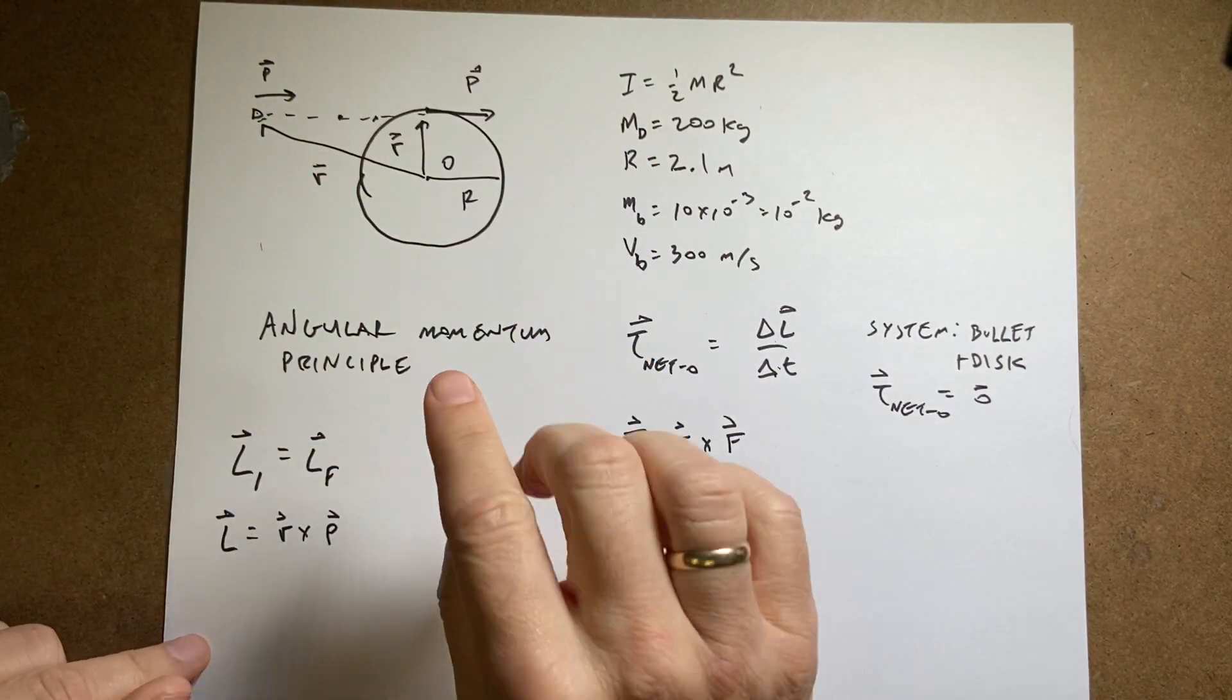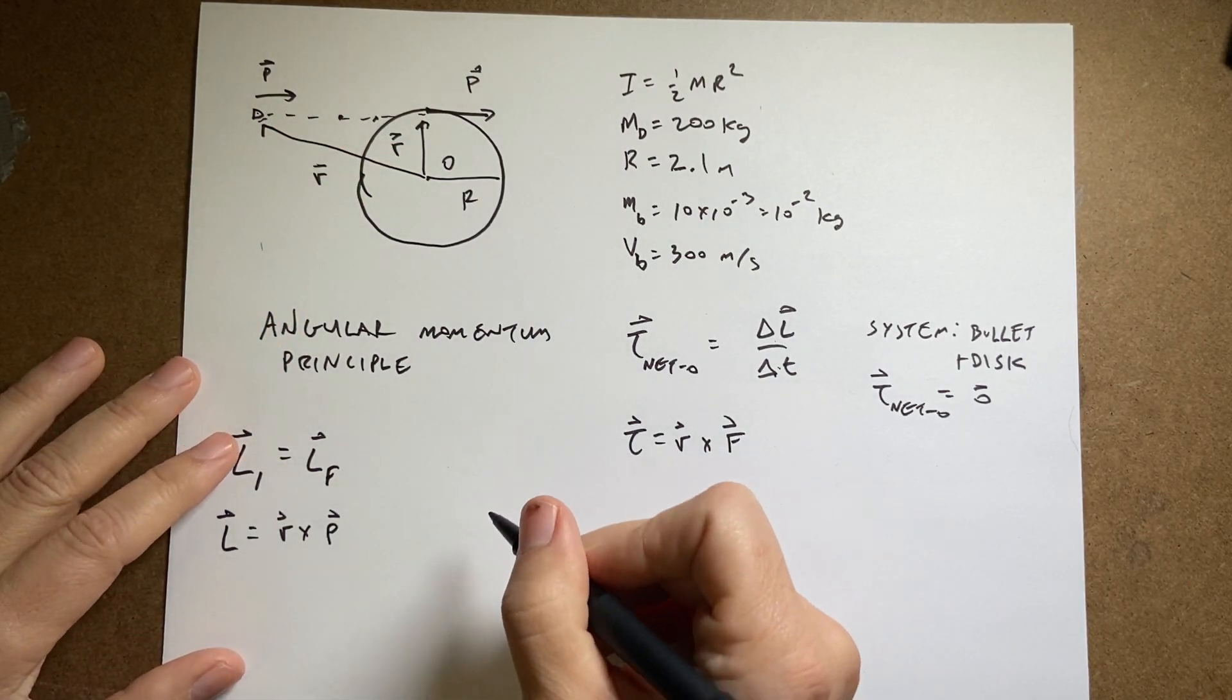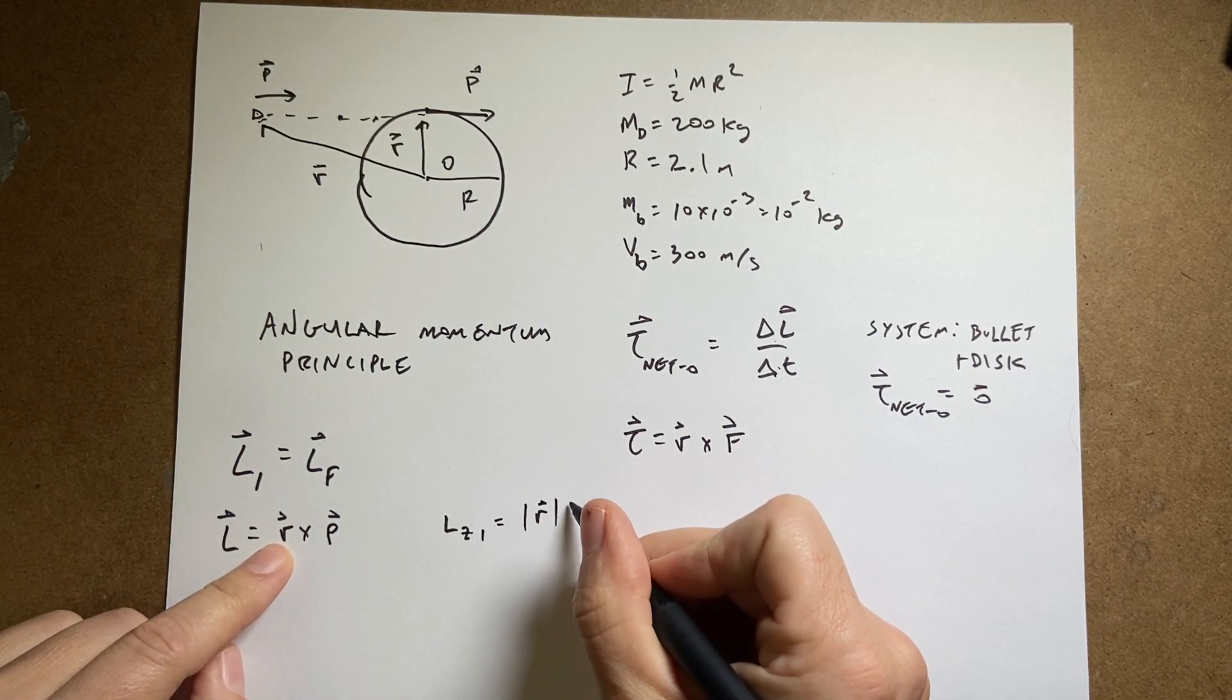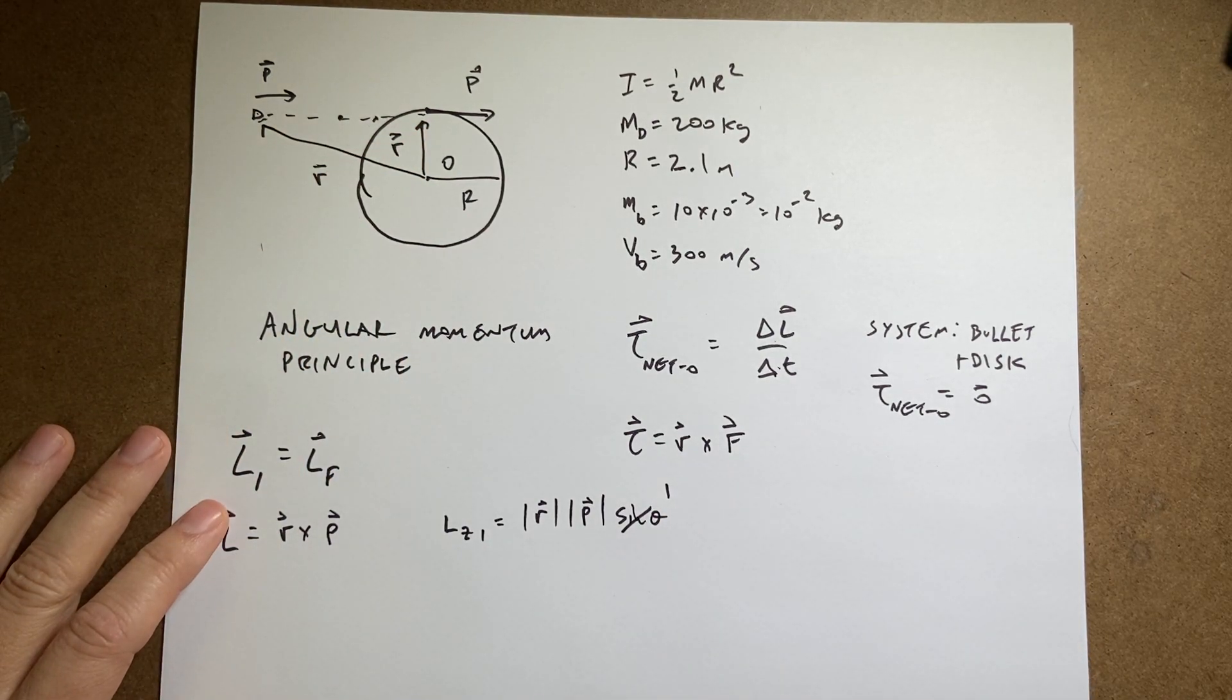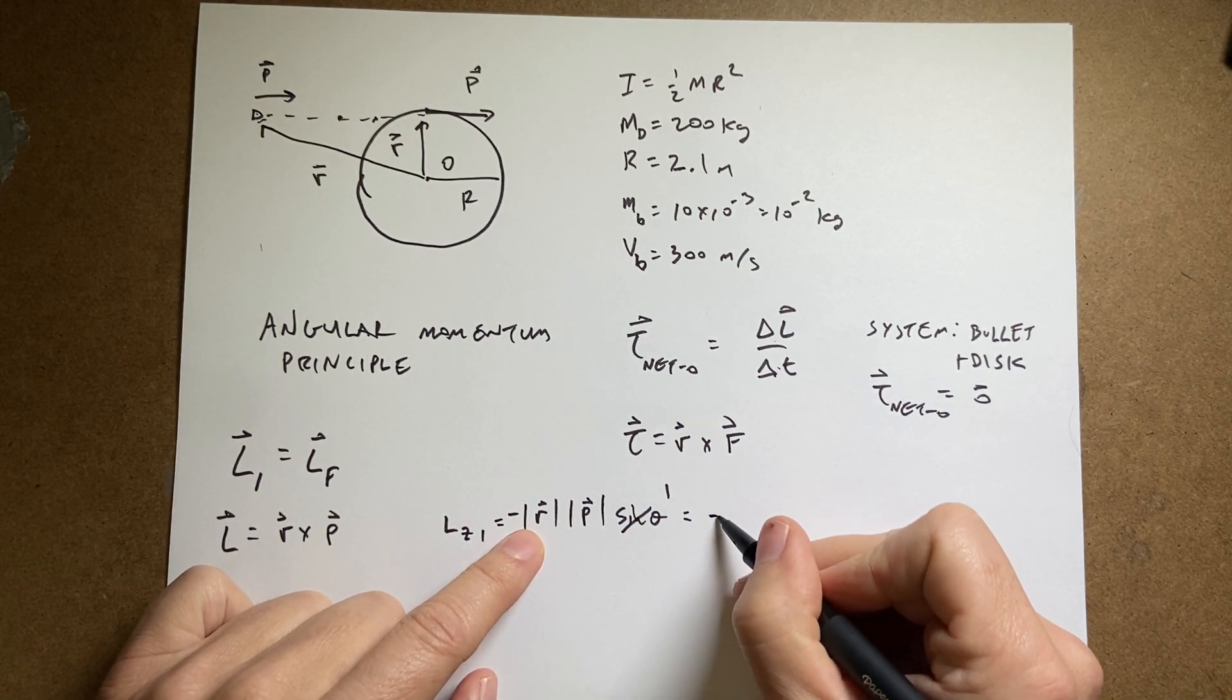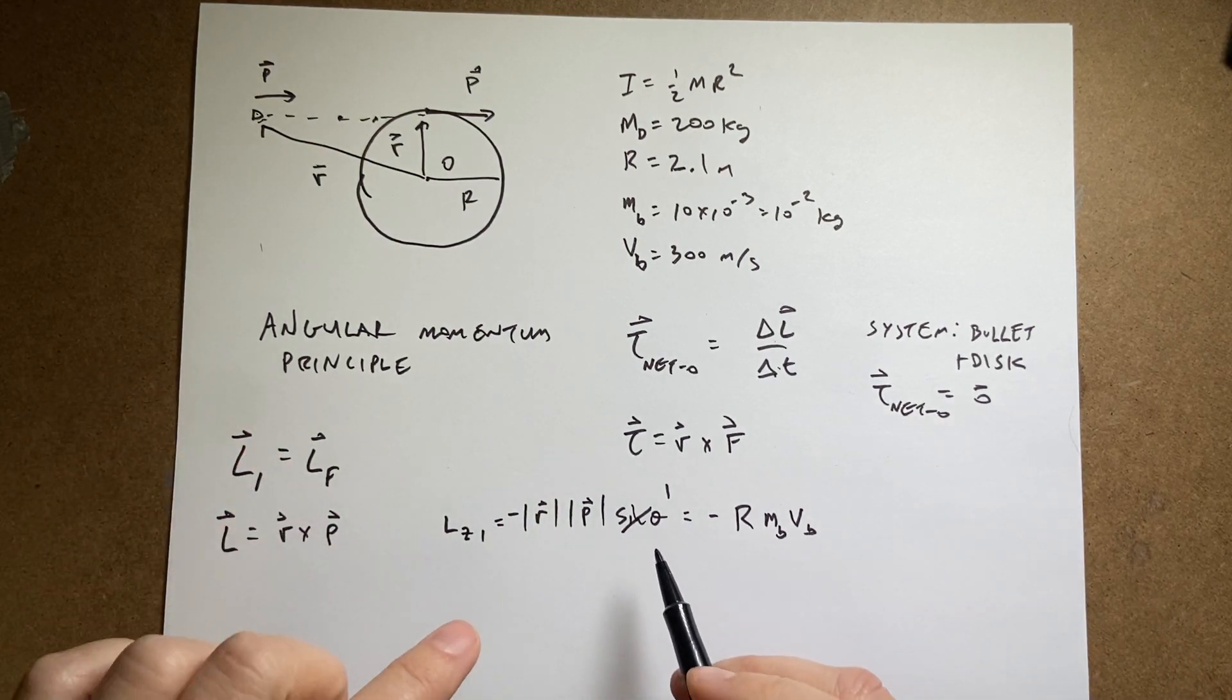The magnitude of angular momentum, using the right-hand rule, would be into the paper—the negative z direction. So Lz1 equals the magnitude of r times p times the sine of the angle between them. At this point the sine is 1. Using the right-hand rule, this equals negative the radius of the disc times the mass of the bullet times the velocity of the bullet. That's the angular momentum before the collision.